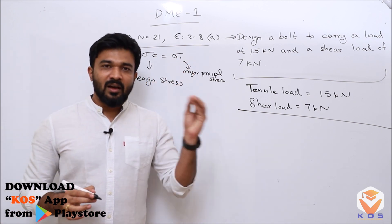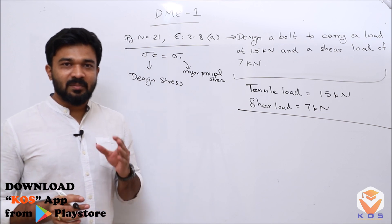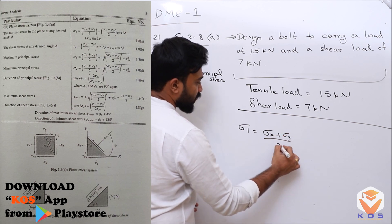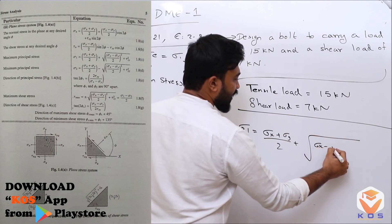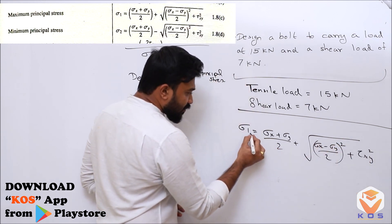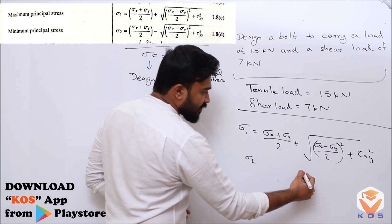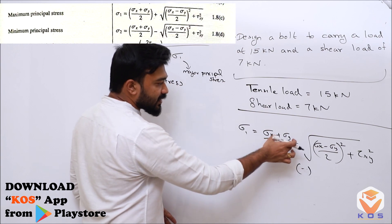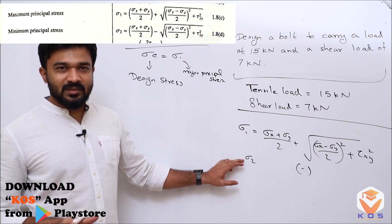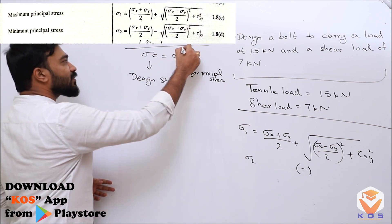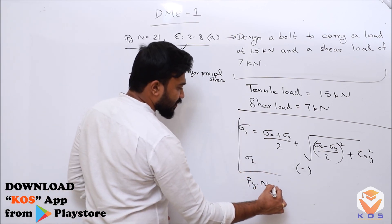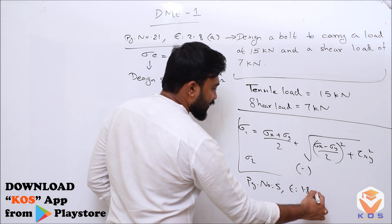Sigma_1 is given by: sigma_x plus sigma_y divided by 2, plus the square root of the quantity (sigma_x minus sigma_y divided by 2) squared plus tau_xy squared. Sigma_1 and sigma_2 are the principal stresses. This is page number 5, equations 1.8c and 1.8e.